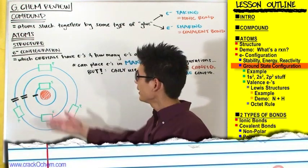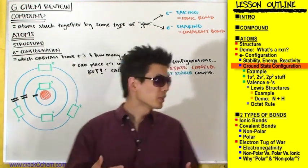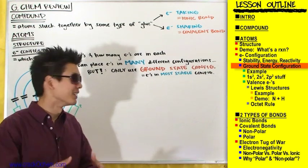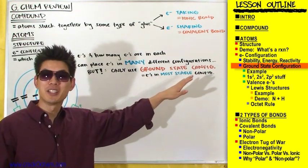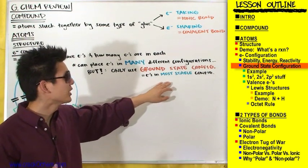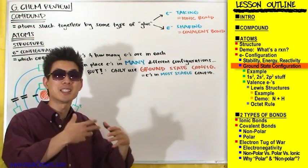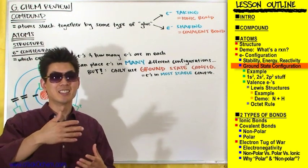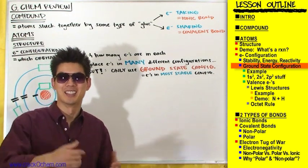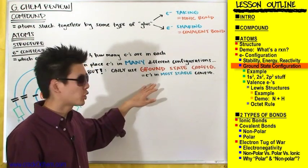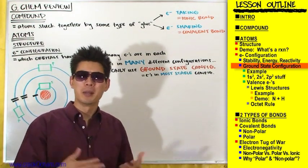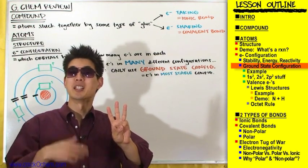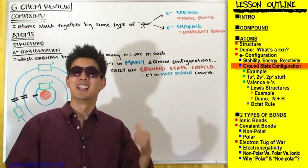Getting back to electron configuration: there are many configurations electrons can be in, but we only care about the ground state configuration — where electrons are in their most stable states — because stability is always favored over instability. We have three rules for how to place electrons in their most stable ground state configuration.